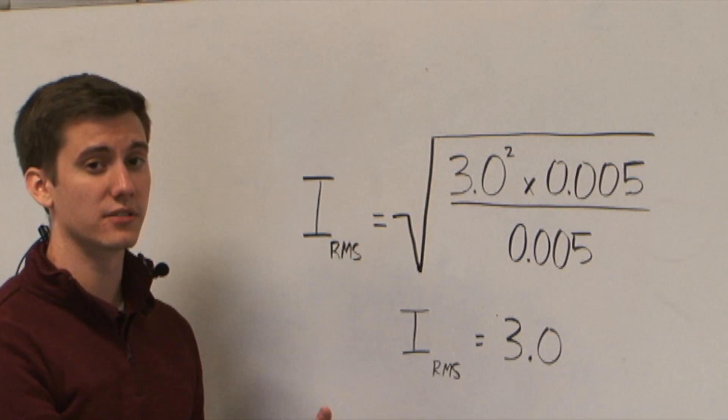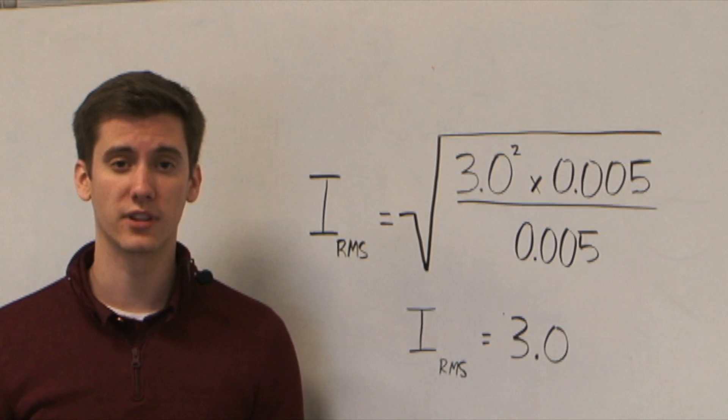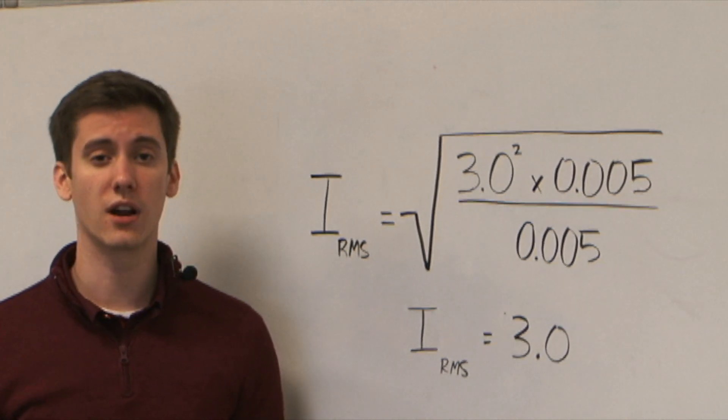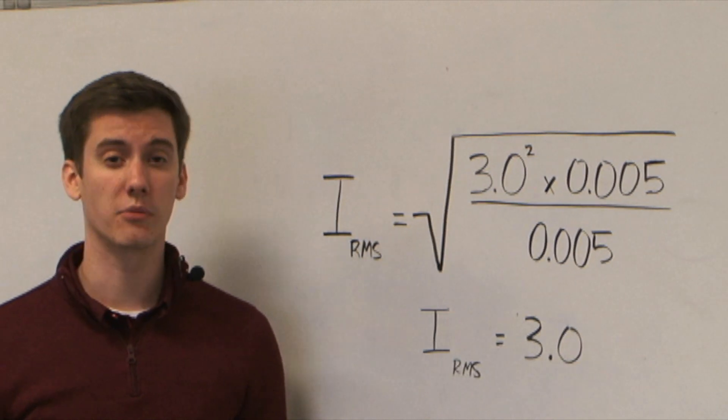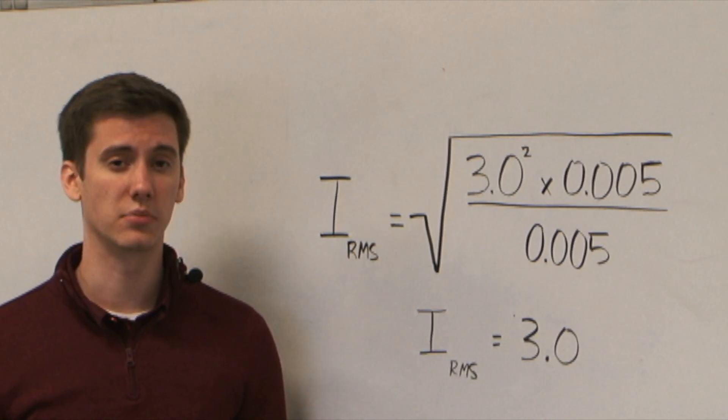As we can see in the calculation, the RMS value of a full step is equal to the motor and drive current. This is the same for a half step. However, the calculations for microstepping are a little more complex.